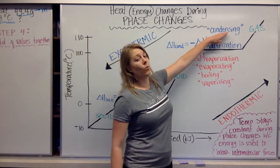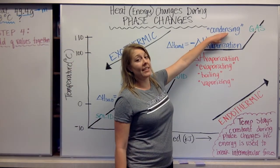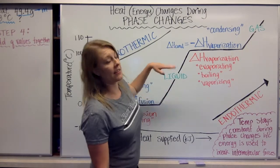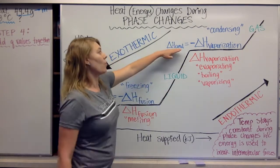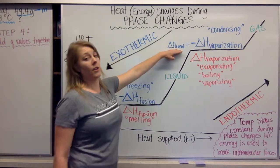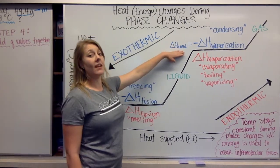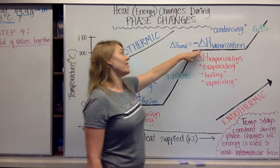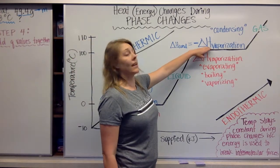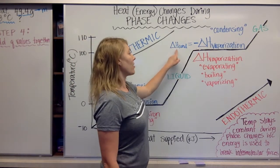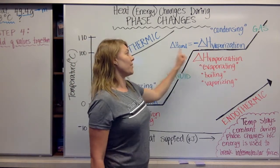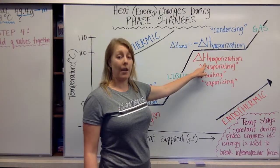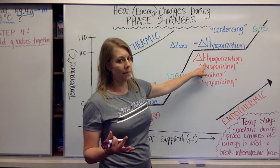When gas condenses into a liquid form, we know that as condensation. In chemistry the delta H of condensation is equal to the negative delta H of vaporization. So condensation and vaporization are equal values but opposite.